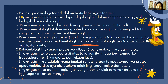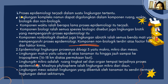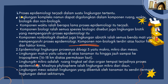Komponen non-biologi terdiri atas faktor fisik dan faktor kimia. Lingkungan proses epidemiologi dibagi juga yaitu makro, mikro, dan meso. Lingkungan makro yaitu udara di atas tanaman hingga jauh sampai ke troposfer 16-18 km di atas permukaan laut. Lingkungan mikro adalah ruang singkat sel dan organ tempat terjadinya proses epidemiologi, misalnya lingkungan mikro pada daun. Kemudian lingkungan meso adalah lingkungan yang dibentuk oleh tanaman itu sendiri termasuk lingkungan dekat sekitarnya.